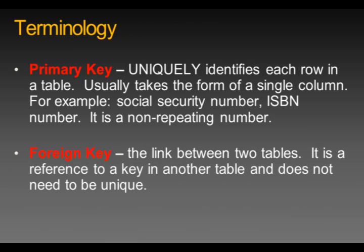I can create relationships from previously unrelated data sources by matching columns that contain similar or identical data. When I define a relationship, I connect a source column, sometimes called a foreign key column in the first table, to a target column, also known as a primary key column, in a second table.